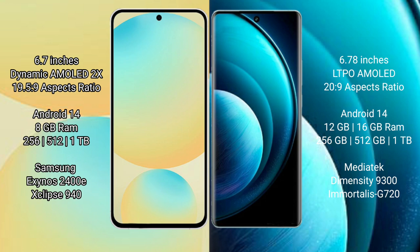Samsung Galaxy S24 FE is powered by the Exynos 2400E processor with an AnTuTu score of around 940K. Vivo X100 Pro comes with 8GB RAM and 128GB, 256GB, 512GB, or 1TB internal storage, powered by the MediaTek Dimensity 9300 processor with an AnTuTu score of around 720K.